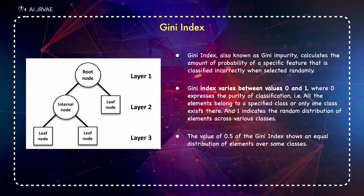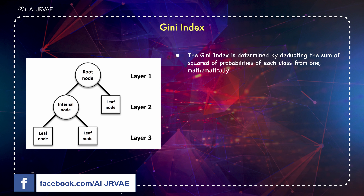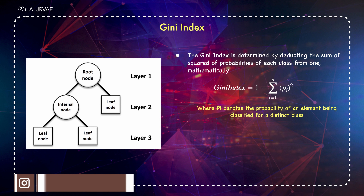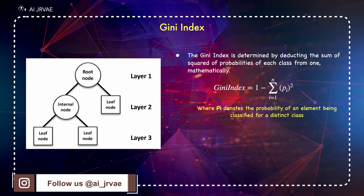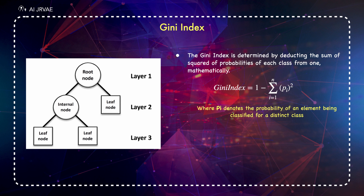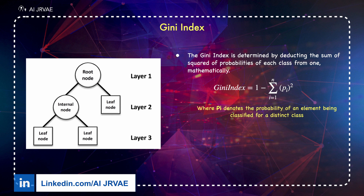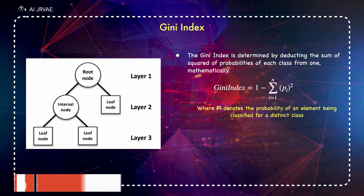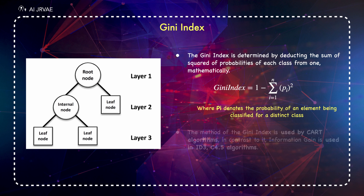While designing the decision tree, features possessing the least value of the Gini Index would be preferred. The Gini Index is determined by deducting the sum of squared probabilities of each class. This is the Gini Index formula, where PI denotes the probability of an element being classified for a distinct class. The Gini Index facilitates bigger distributions, so it is easy to implement, whereas information gain favors lesser distributions having small counts with multiple specific values. The Gini Index method is used by CART algorithms, while information gain is used in ID3 and C4.5 algorithms.